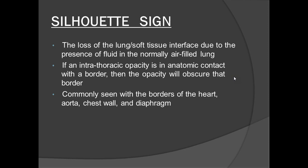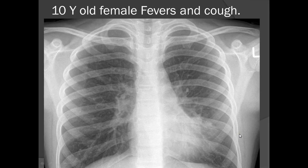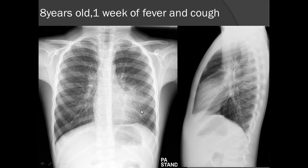The silhouette sign localizes pneumonia. If the left heart border is not visible, consolidation is in the lingular segment of the left lobe. If the left heart border is visible but the left hemidiaphragm is not well defined, consolidation is in the left lower lobe. In a 10-year-old female with fever and cough, the left heart border is not seen — confirming lingular consolidation.